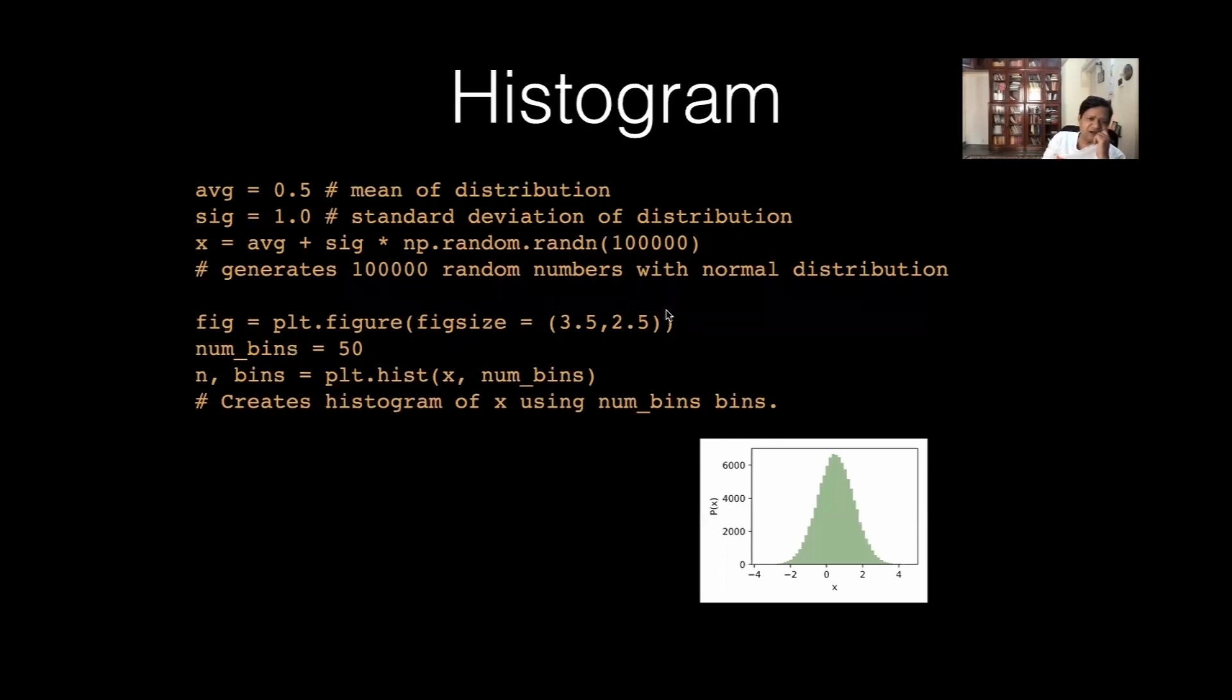Now, let us look at histogram. We can also make histograms. So, histogram is that I have of data and I can sample them in different bins. So, I create a x random variable x, which is random, but with.